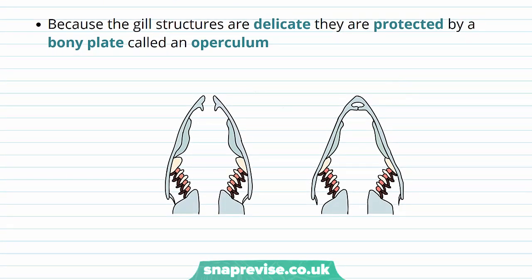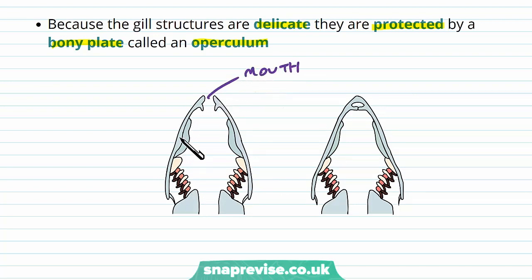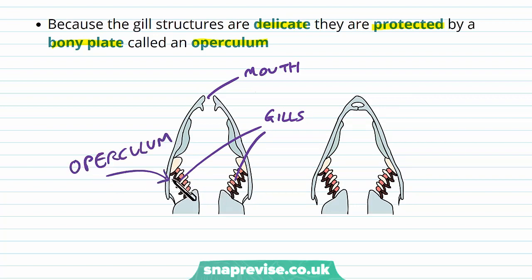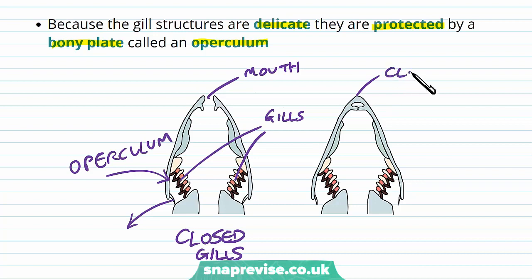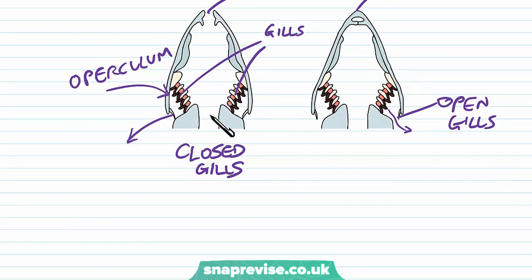The gill structures are quite delicate because they're made up of lots of tiny structures, so they're protected by a bony plate called the operculum. Looking at a diagram through the top of a fish — imagine the fish's eyes would be either side — we've got the mouth at the front, the skeleton of the mouth and its mouth cavity, and then the gills on the right and left, just as there are lungs on our right and left. The operculum plate protects the gills from the outside environment and has a small vent which can open and close. On one side the gills are closed but the mouth is open; on the other side the mouth is closed and the operculum vent is open so water can flow through.